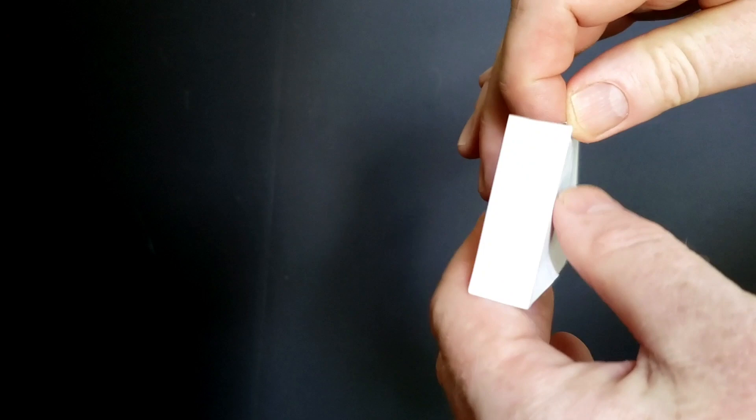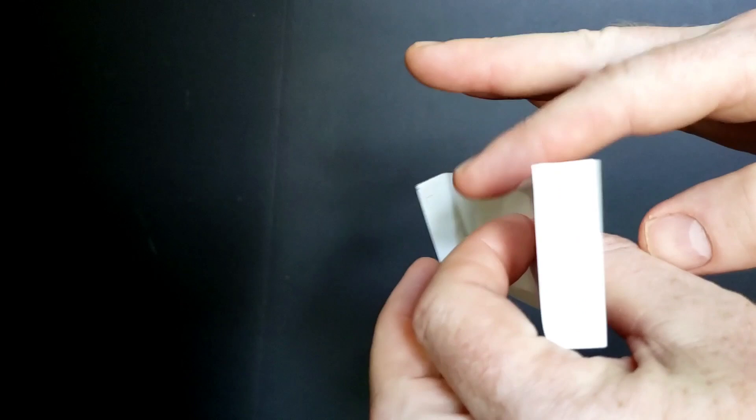To launch your glider, make sure the glider is straight up and down like this. Make sure that the top fold is facing away from you. And just hold it by that top fold, and let it go. Away we go.